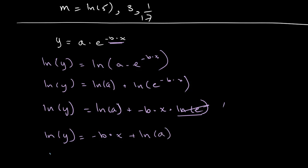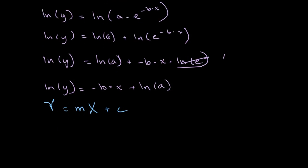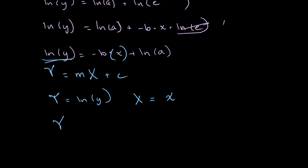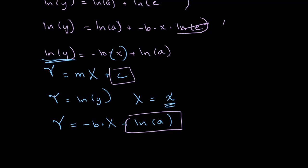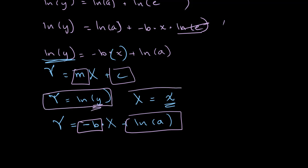Since ln of e equals 1, we get ln of y equals negative b times x plus ln of a. We rewrite this in linear form by taking capital Y equal to ln of y and capital X equal to x. So capital Y equals negative b times capital X plus ln of a, where C is ln of a (a constant), M is negative b (a constant), Y is in terms of y, and X is in terms of x.